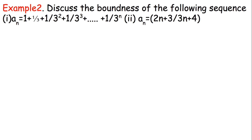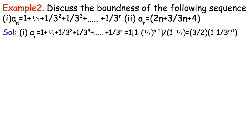Now let's discuss the boundedness of the sequence AN = 1 + 1/3 + 1/3² + ... up to 1/3^N, which looks like a geometric progression. We know how to compute a GP from earlier classes. The first term is 1 and the common ratio is 1/3. We write the sum using the GP formula: 1 × (1 − (1/3)^(N+1)) divided by (1 − 1/3).